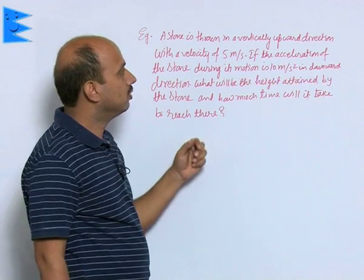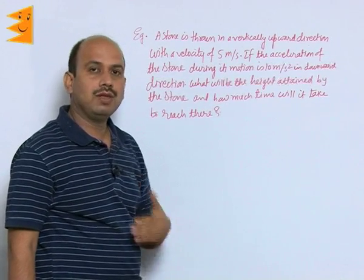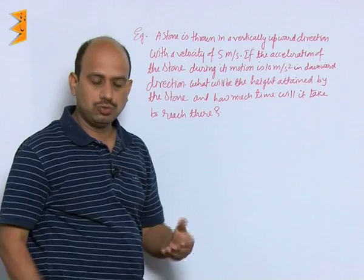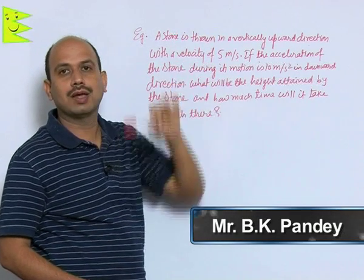Now, see this question is different than the previous questions. Whenever we throw any object, suppose you are throwing this spin like this vertically up, what happened?